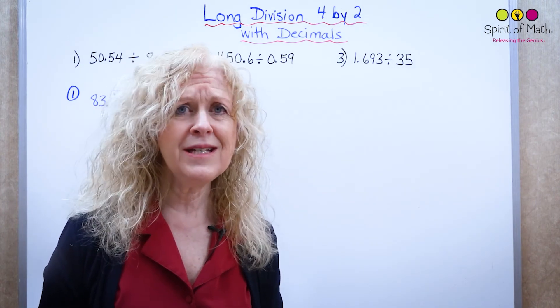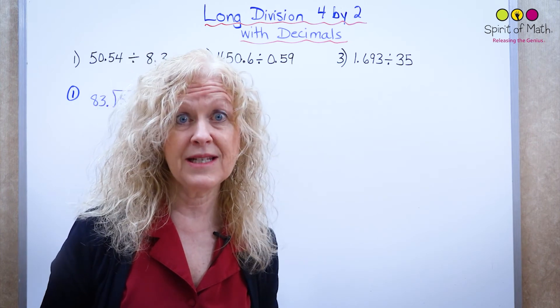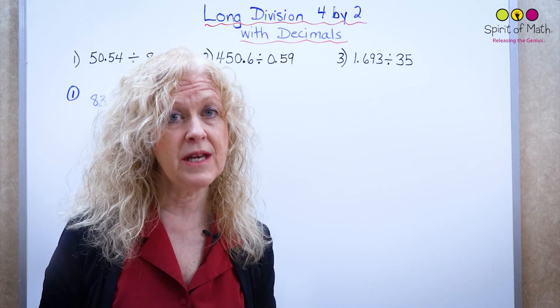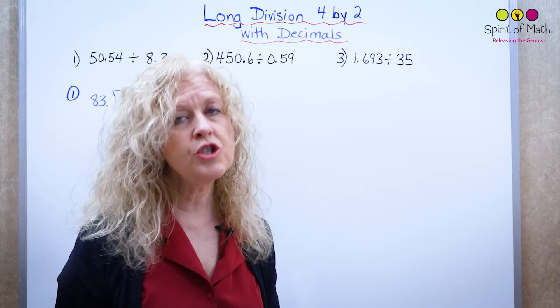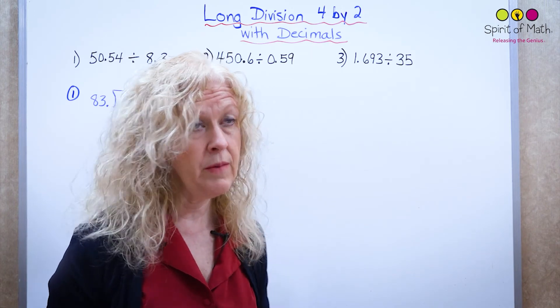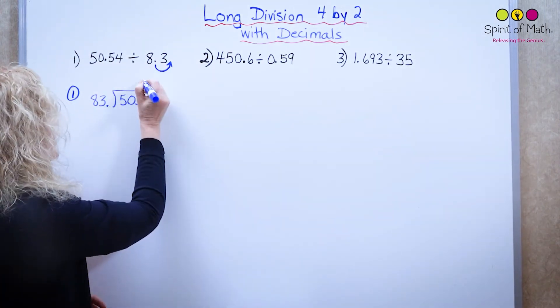So 8 into 50, that's probably about six times, because 8 times 7 would be 56, and 8 times 6 is 48. So I'm going to try 6. Sometimes when you try something, it doesn't quite work and you find out it's too big of a number, but let's try 6 because that's pretty close.